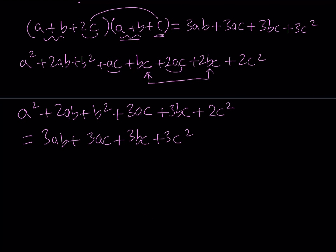So we're going to simplify this expression and combine like terms. I do see 3AC on both sides, so let's go ahead and cancel that. Then 3BC cancels out as well. Now I have A squared plus 2AB plus B squared and I subtract 3AB from it, which gives me negative AB. I can bring the 2C squared over near the other one, and subtracting 2C squared from 3C squared gives me C squared. So the result is: C squared equals A squared plus B squared minus AB.